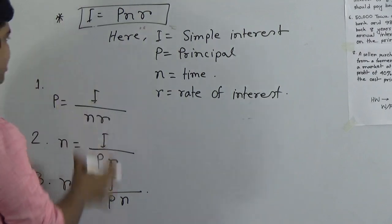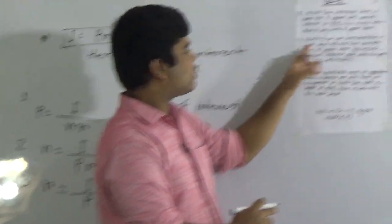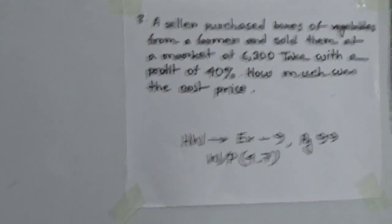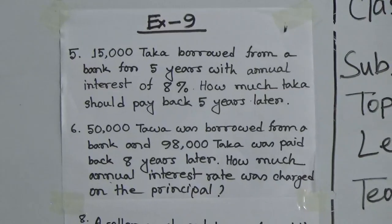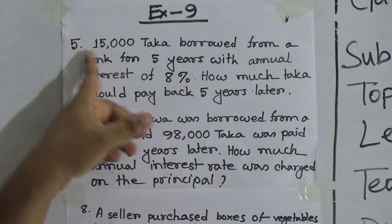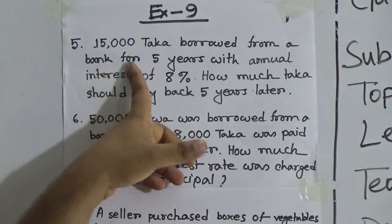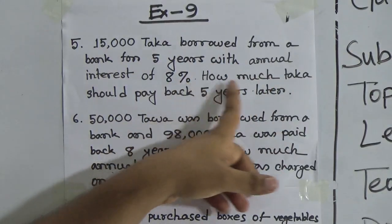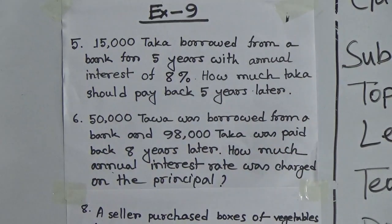By using this formula we need to solve question 5 and 6. At first we read question number 5, and after reading it we use this formula to find out the answer. Here you notice question 5: 15,000 taka is borrowed from a bank for 5 years with an annual interest of 8%. How much taka should be paid back 5 years later?